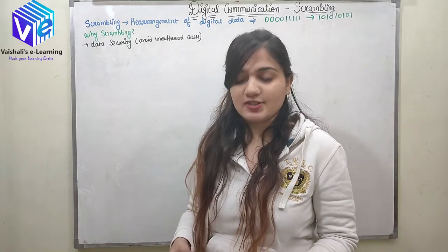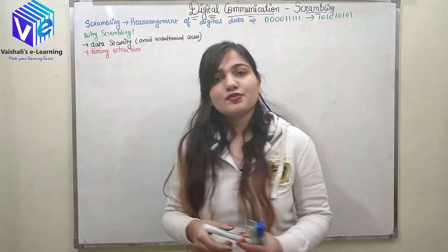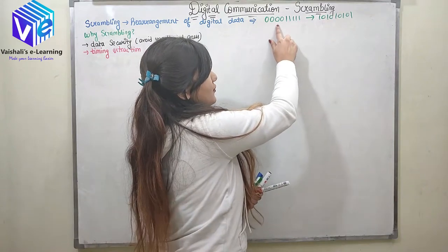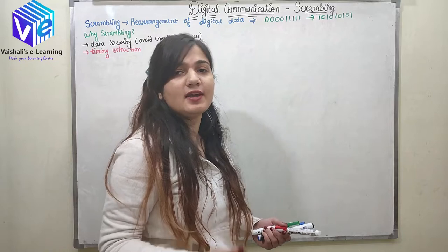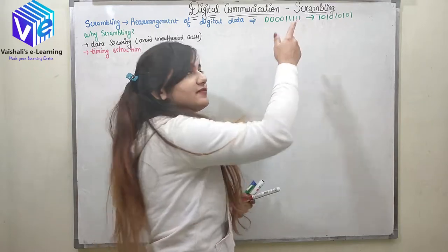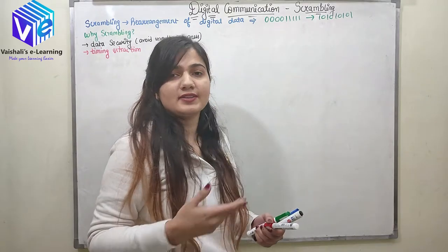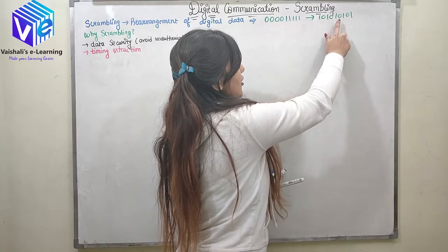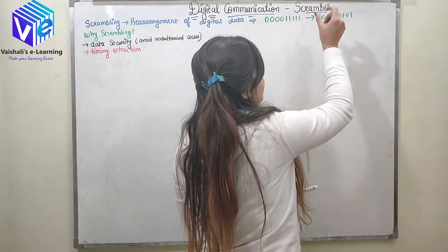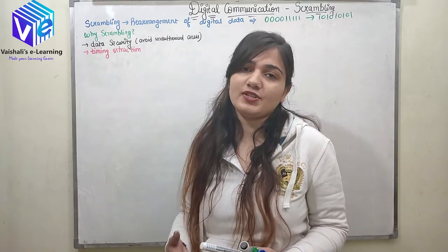The next reason is timing extraction. If I have a long series of zeros or ones, my receiver won't be able to know if data is still coming — it will think the data has stopped. That is why a long flat line of 0s or 1s causes problems. If I rearrange my data through scrambling, it will continuously change from high to low voltage and the receiver will know that data is coming. This is how timing information is extracted by scrambling.